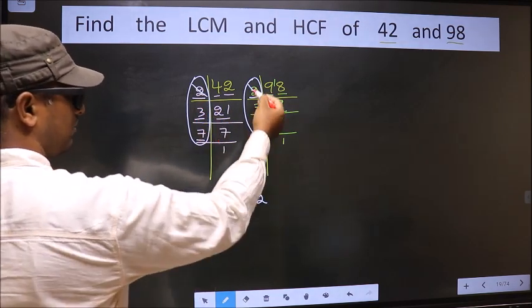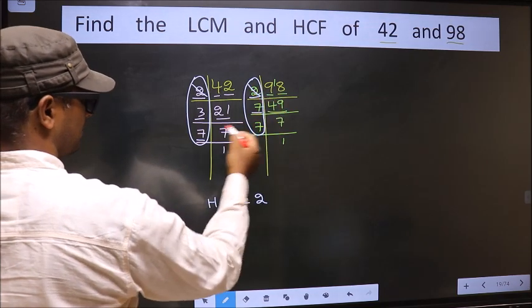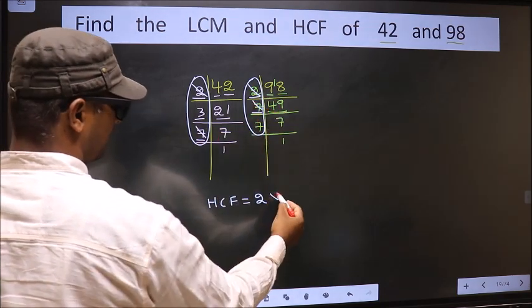Next number 7, do we have 7 here? Yes. So you cut 7 and right here.